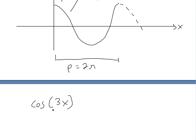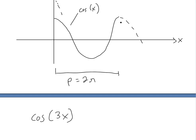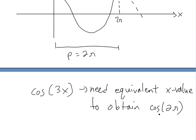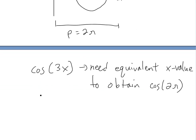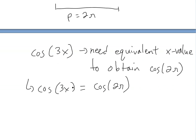To find the period of cos(3x), we need to find the equivalent x value. The period for cos(x) is 2π, so what value of x for this new function gives us 2π? We set cos(3x) equal to cos(2π), and it's only true if the insides are equal. So we get 3x equal to 2π.